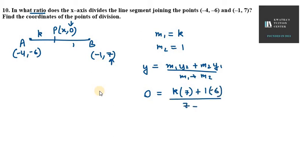And M1 plus M2 is K plus 1. So 0 equals K times 7 plus 1 times minus 6 over K plus 1. So 0 equals 7K minus 6 over K plus 1. So 7K minus 6 equals 0. Now we can easily get the value of K. 6 equals 7K, so K is 6 over 7.